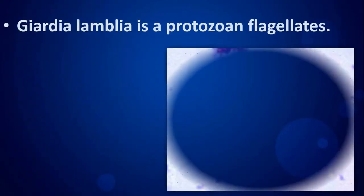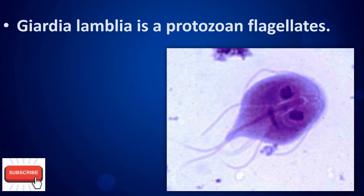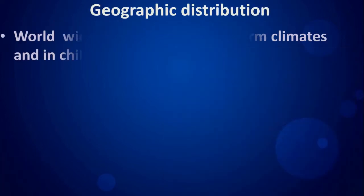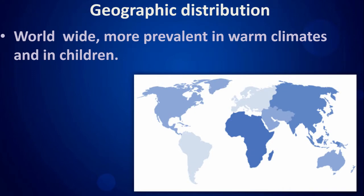Giardia lamblia is a protozoan flagellate. Geographic distribution: worldwide, more prevalent in warm climates and in children.